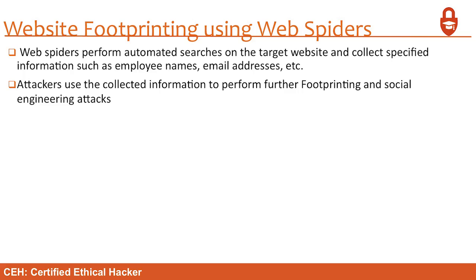Website footprinting using web spiders: a spider goes out and searches every possible link on a page, visiting every link recursively in a deep-dive search through the entire site. It performs directory enumeration, looking for config directories and anything published by the web server — digging until it can't dig further. Burp's spider functionality does the same thing. Web spiders perform automated searches on the target website and collect specific information such as employee names and email addresses, which attackers can then use for further footprinting and social engineering attacks.